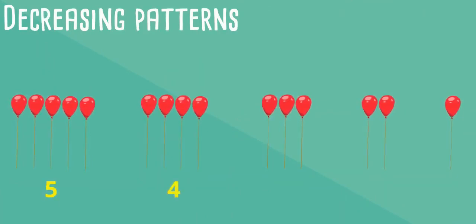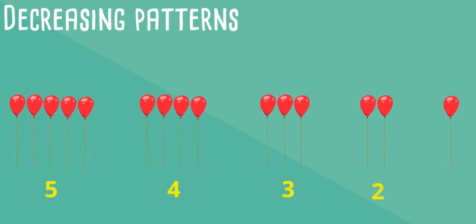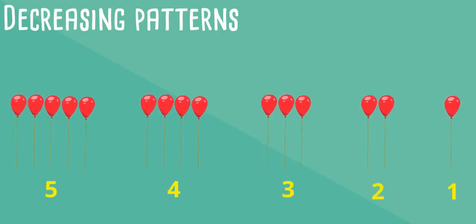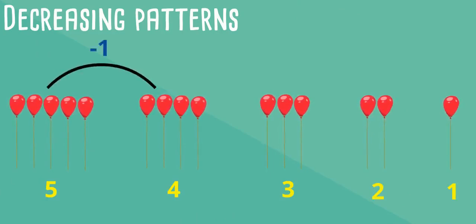The next bunch has 4 balloons. Then 3 balloons and 2 balloons. Finally 1 balloon. So in this example the number of balloons is decreasing by 1.